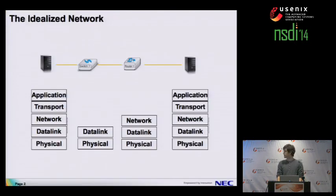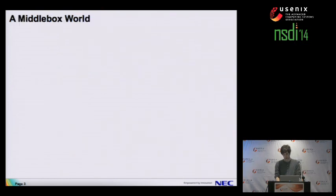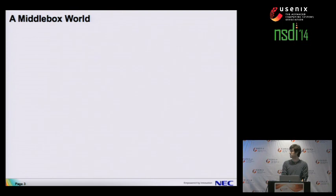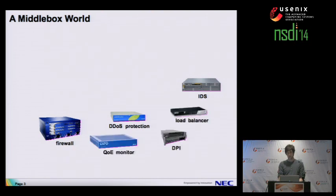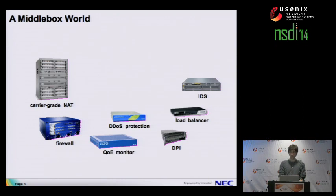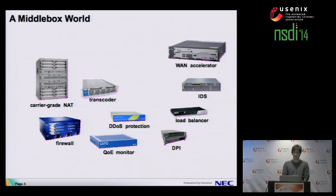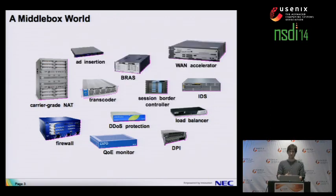How does the network look? In textbooks: end hosts with a network in between, connected with switches and routers — pretty simple. But the reality is quite different. Middleboxes are commonplace in today's networks and are important for many reasons: security, monitoring, load balancing, dealing with address exhaustion issues, performance, and some more dubious boxes like advertisement injection boxes.